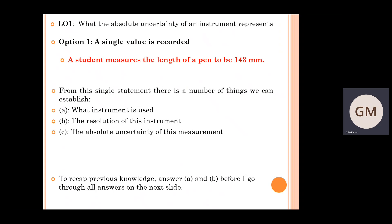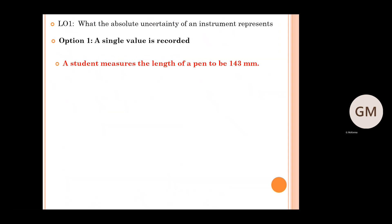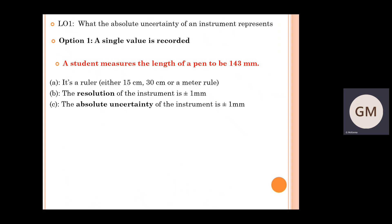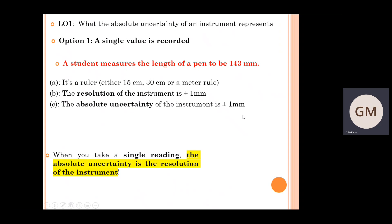Based on the previous lesson, we should be able to address criteria A and B. Going through the solution: part A, it should be a ruler — either a 15 cm, 30 cm, or metre rule — given the fact it's only measuring to the nearest millimetre. The resolution of the instrument is therefore plus or minus one millimetre. The absolute uncertainty is also plus or minus one millimetre. So when you take a single reading during an investigation, the absolute uncertainty is the resolution of the instrument. It really is as simple as that.